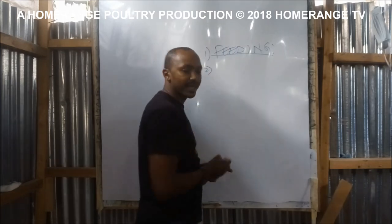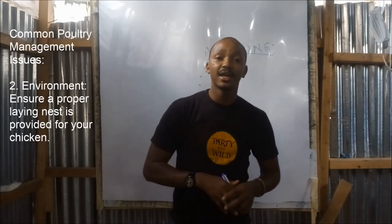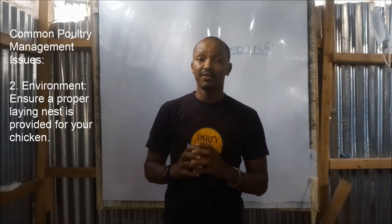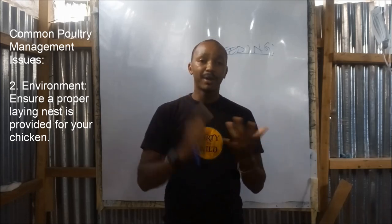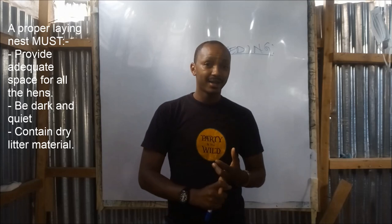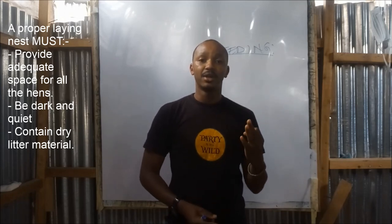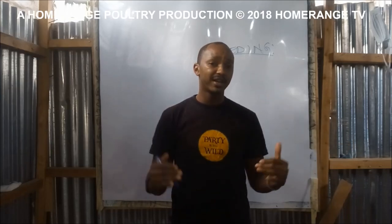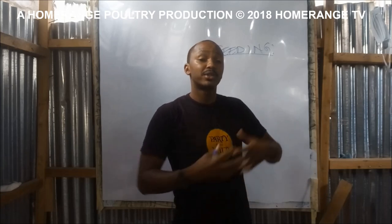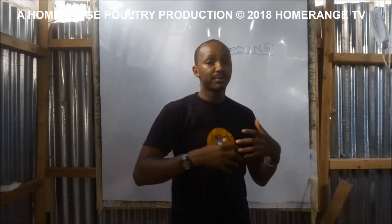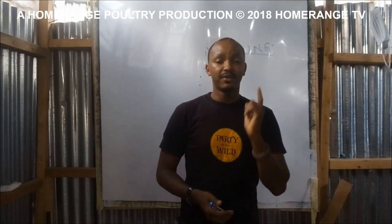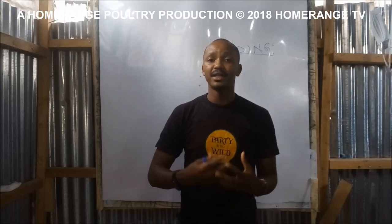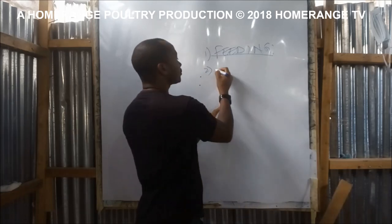The second aspect you must make sure your chicken has is the environment. For a chicken to produce eggs, a nest box must be provided. Not only should a nest box be provided, it must have sufficient space, it must be dark, and it must have dry litter material. If the nest space is very small and you have many hens, egg production is usually very low because some hens suppress egg production as they don't have space to go and lay. A sufficient nest space with dry litter material that is dark is very important.